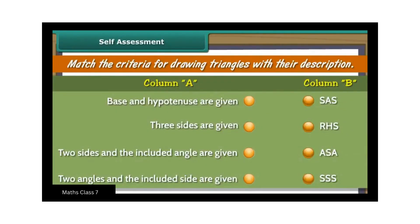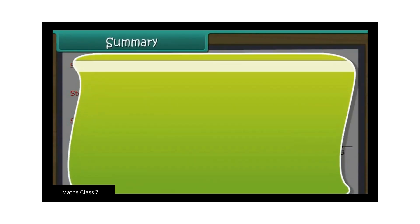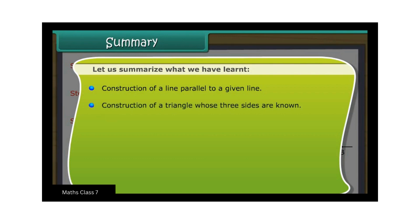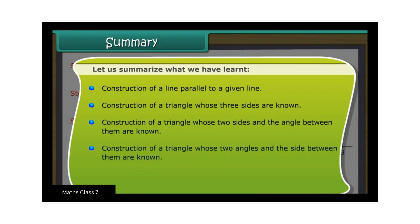Self-assessment: Match the criteria for drawing triangles with their description. Summary: Let us summarize what we have learned. Construction of a line parallel to a given line. Construction of a triangle whose three sides are known. Construction of a triangle whose two sides and the angle between them are known. Construction of a triangle whose two angles and the side between them are known. Construction of a right angled triangle whose one leg and hypotenuse are known.